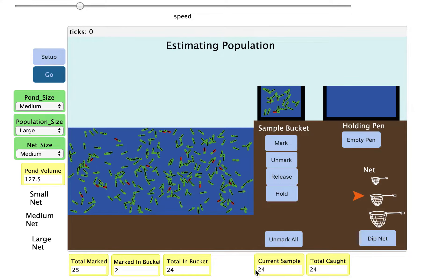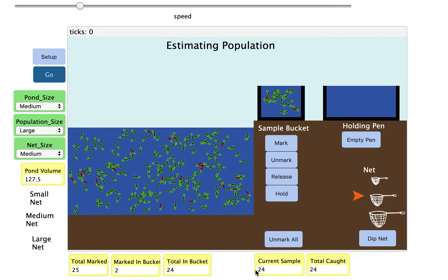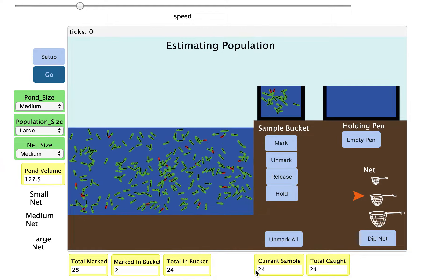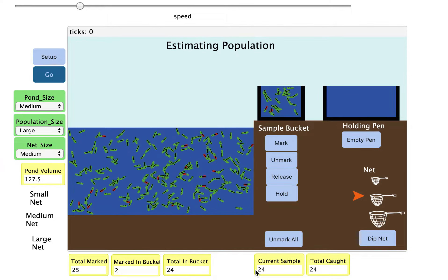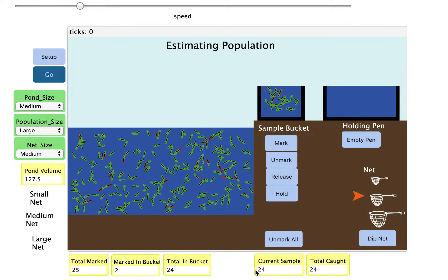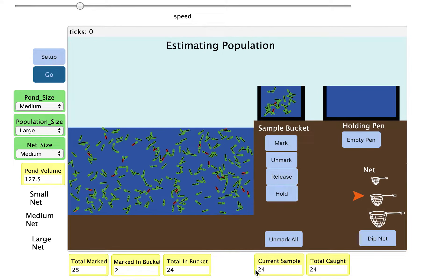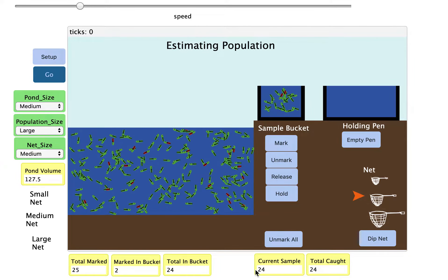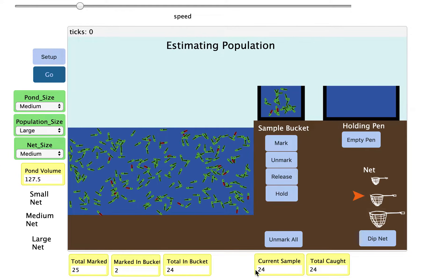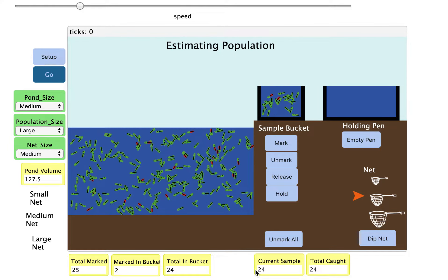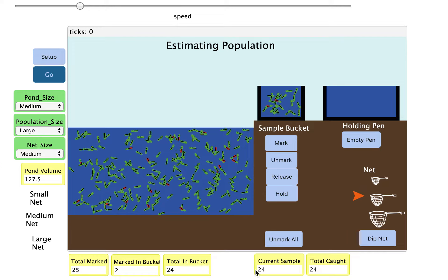We're going to build an equivalent ratio to figure out how many fish are in the entire pond. We would have 2 over 24 equals what? What would be our second ratio? The first ratio is two over 24, the number of marked over the total. What would the second ratio be for the entire tank?